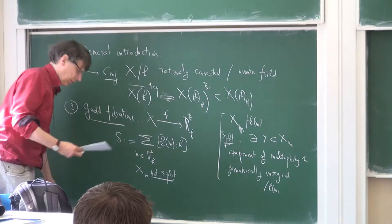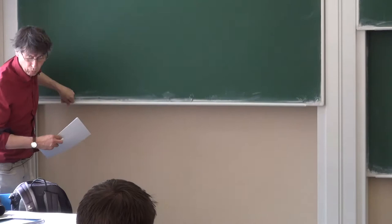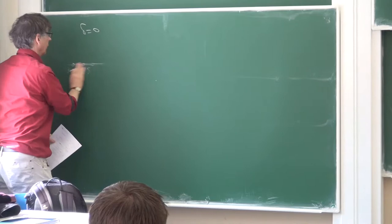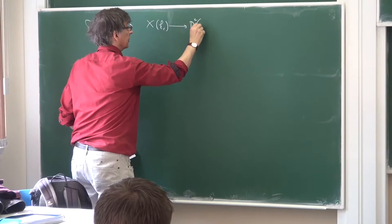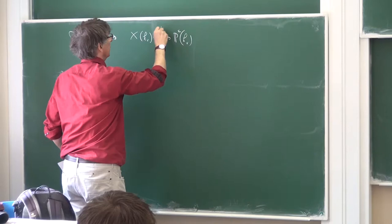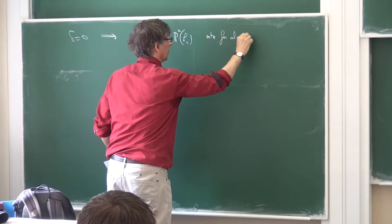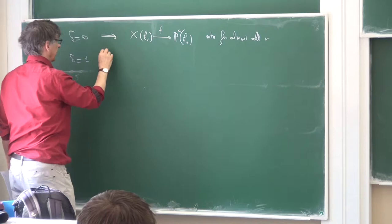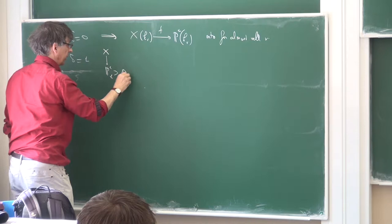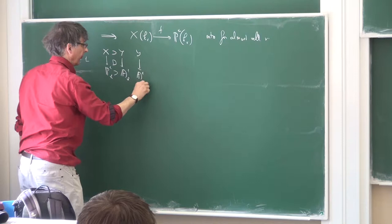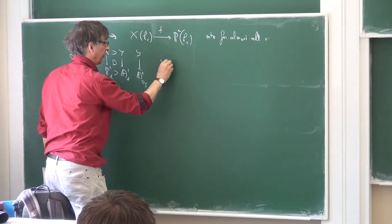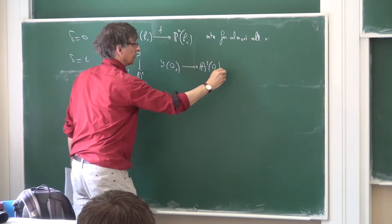If delta is large, the situation is difficult. In the second lecture we saw the good cases when delta is 0 or 1. For delta equals 0, all fibers are split, and the map from X(k_v) to P¹(k_v) induced by f is surjective for almost all v. For delta equals 1, if the bad point is at infinity and we look at Y over A¹_K, then integral points are onto A¹ over O_v for almost all v.